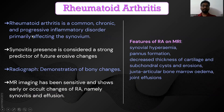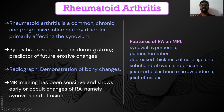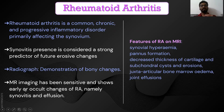Rheumatoid arthritis is a common chronic and progressive inflammatory disorder primarily affecting the synovium. The main early feature is synovitis, which is a strong predictor for future erosive changes. On radiography you will see bony changes when it is in the chronic stage, whereas MRI is mainly helpful to see earlier or occult changes of RA.